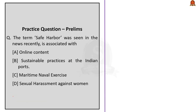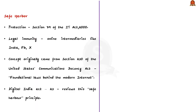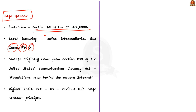Let us move on to solve the next MCQ. This question talks about a concept called safe harbor which was recently seen in the news. Before solving, let us see in brief about what safe harbor is. Firstly, safe harbor is a protection available under Section 79 of the IT Act 2000. It is a legal immunity that online intermediaries like Instagram, Facebook, and X enjoy against the content which is being posted on them by the users.